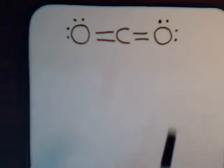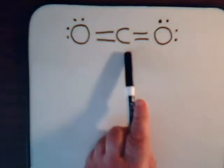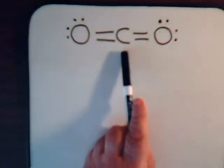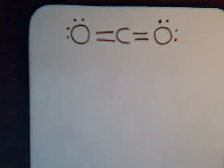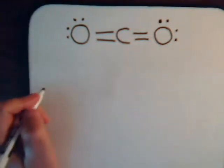Now, for carbon to accomplish this, there's only one way. It has to be sp hybridized. And to understand why, let's look at the orbital block diagram for carbon.